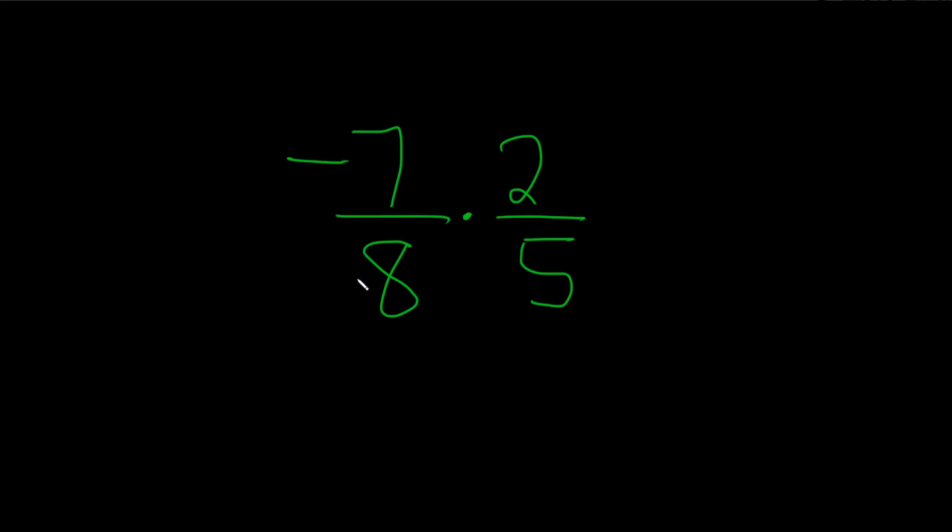Multiply negative 7 over 8 times 2 over 5. So because one of the fractions is negative, we know automatically the answer is going to be negative.